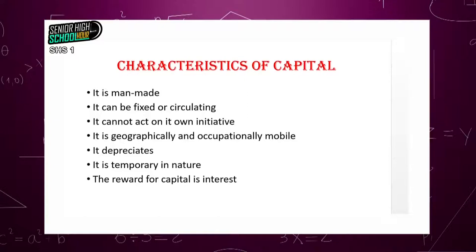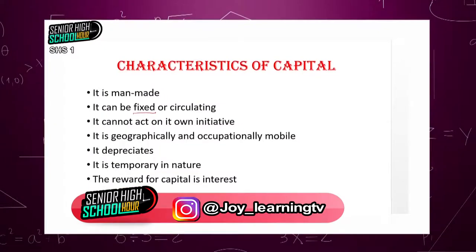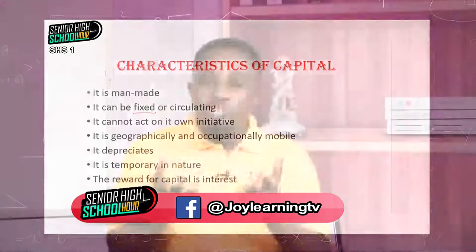Let's look at the characteristics of capital. Capital is man-made — man brought it into existence. It can be fixed or circulating. When we say capital is fixed, it means that in the course of production, capital does not change its form. For example, in your various schools, the school building has been used to produce students — to produce educational service — and it has never changed. It's still the same over the years. So that is a typical example of fixed capital.